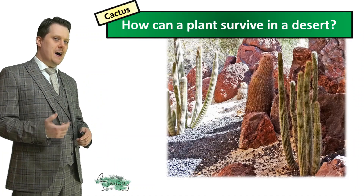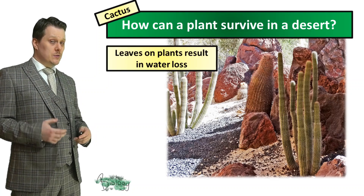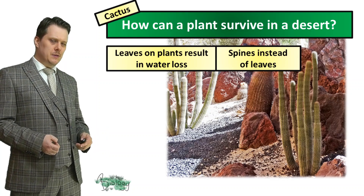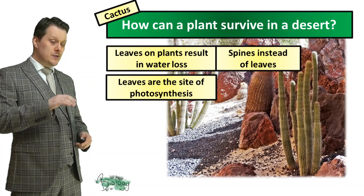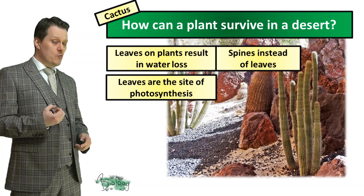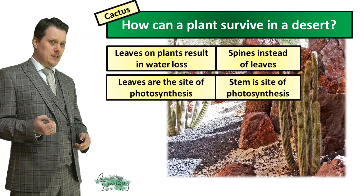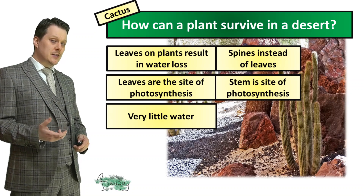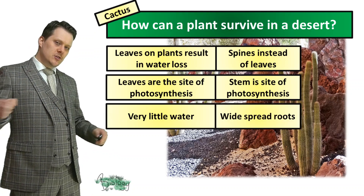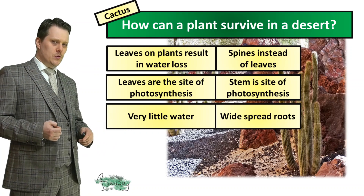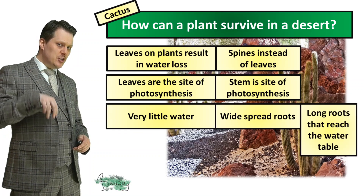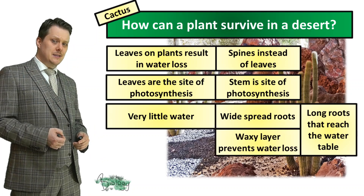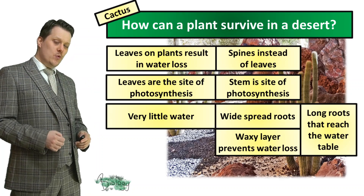So how can a plant survive in the desert? Usually the leaves on a plant result in water loss, but the cactus has spines instead of leaves, so it doesn't have this problem. However, that generates another problem, because leaves are usually the site of photosynthesis where the plant makes its own glucose — so the cactus does its photosynthesis in the stem. It also has very widespread roots so that when it does rain it can absorb as much water as possible. Some cacti have roots which reach down all the way to the water table. The plant also has a waxy layer around it which prevents water loss.